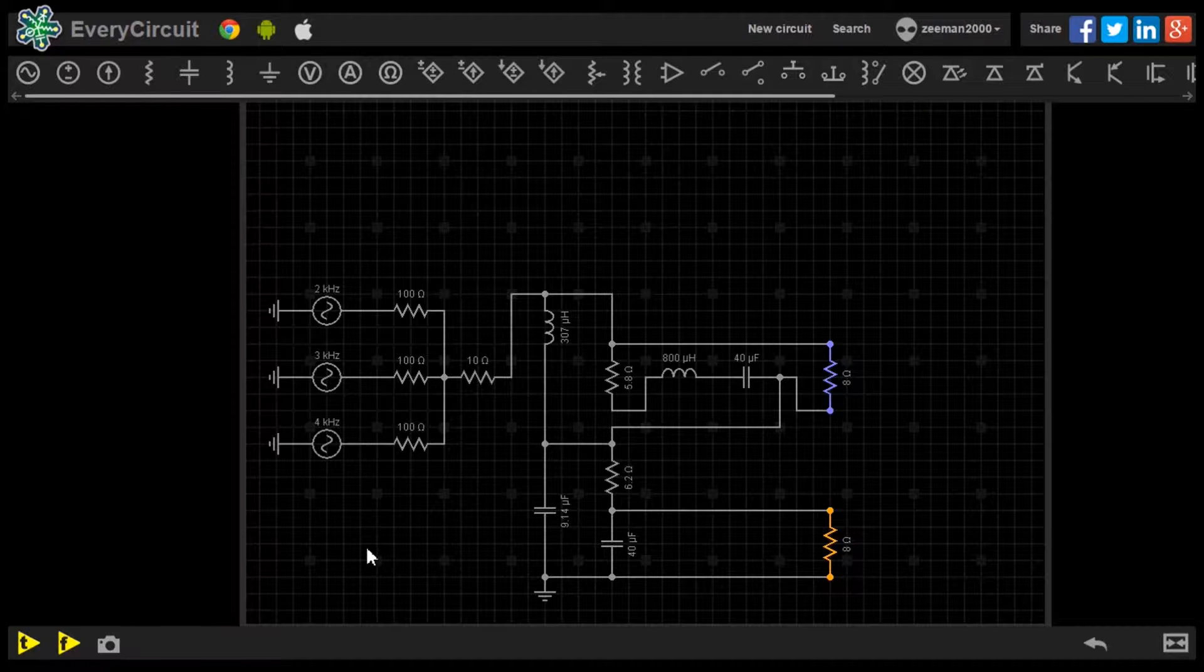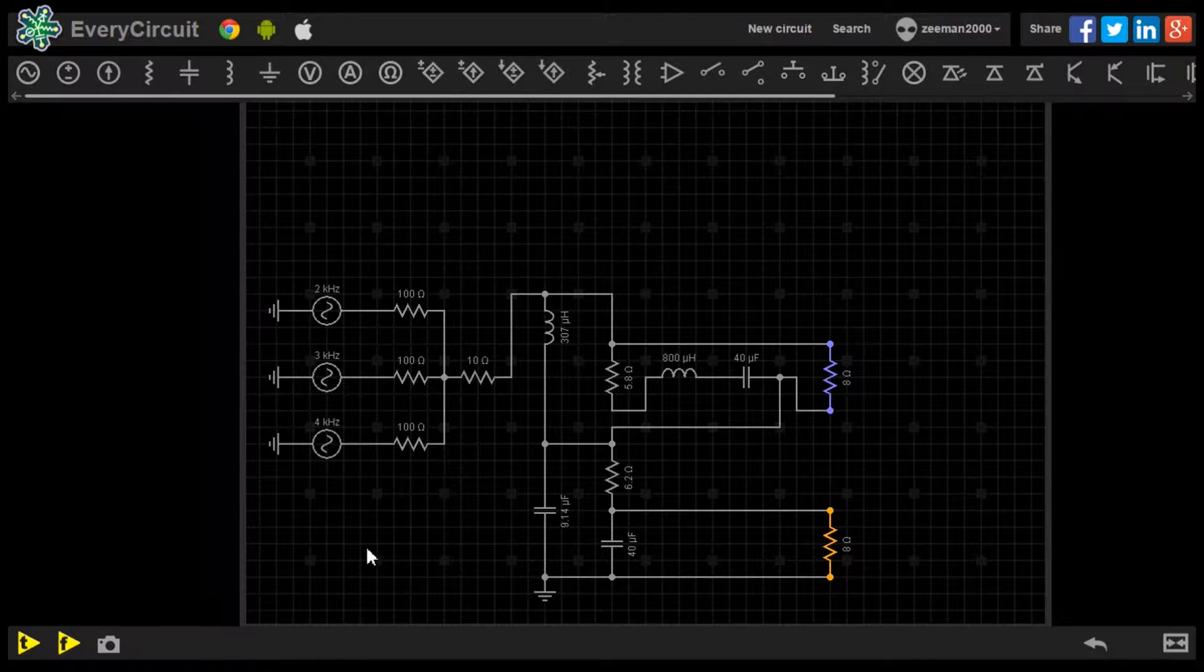With this circuit we can see a practical example of usage for filters. The two 8 ohm resistors represent speakers in an audio system.